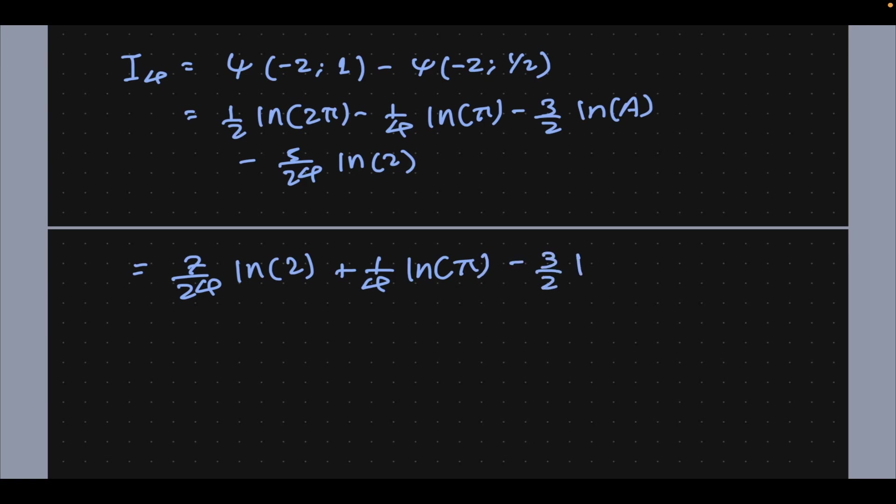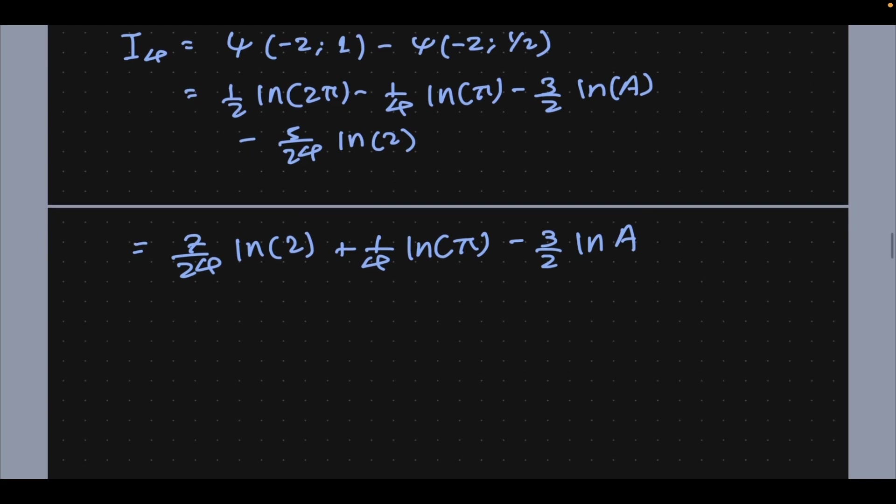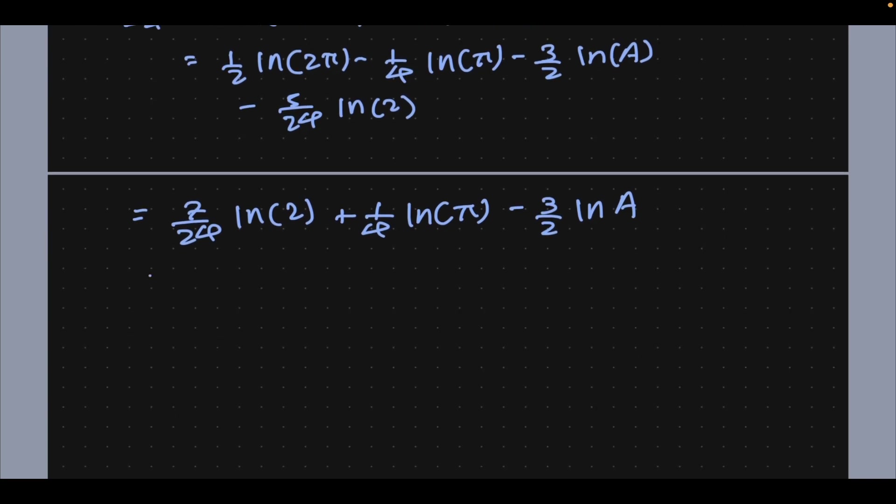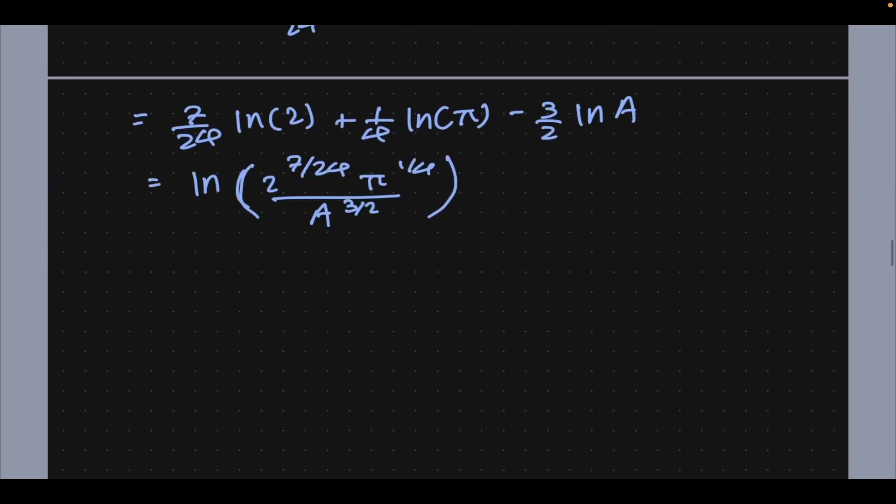7/24 natural log of 2. I'm just simplifying everything. Plus 1/4 natural log of π, it's just mind-numbing algebra, trust me. 3/2 natural log of the Glaisher-Kinkelin constant, which we can write in this really tacky looking way: natural log of 2^(7/24) times π^(1/4) over A^(3/2). There we go, that is I4 precisely.